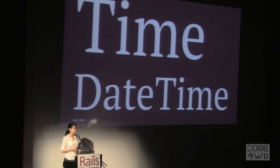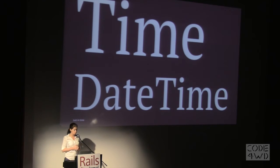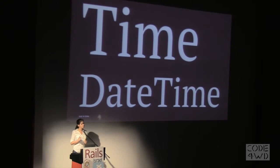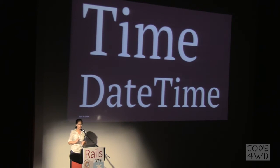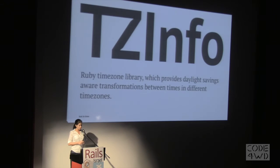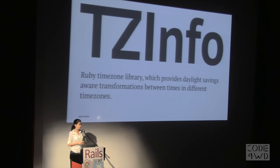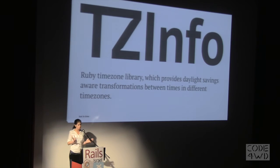In Ruby, we have two libraries: Time and DateTime that handle all the things with time. Since Ruby 1.9.3, there are very few differences between the two libraries. For the rest of this presentation, I'm going to use Time for the majority of my examples. TZInfo is another good library to know — it provides daylight savings and transformations between times in different time zones.